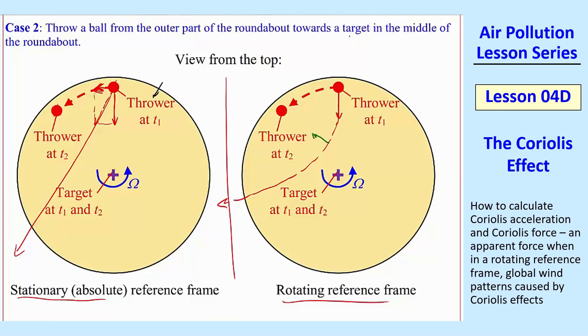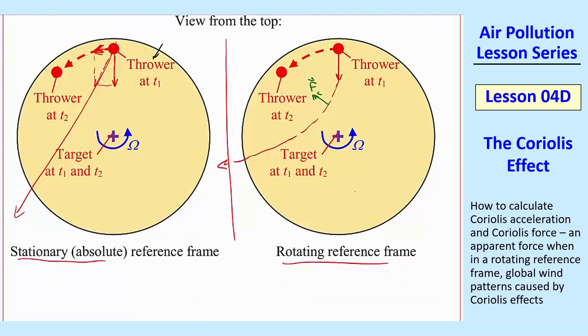he throws it at the target, but because of the Coriolis effect, it veers again to the right, and there will be an apparent force, FC, that's moving this object like the ball towards the right along the path of where he's throwing it. So you throw it at the target, but it misses, and it actually curves around. That's the Coriolis force.